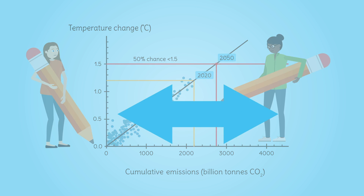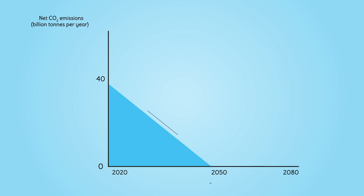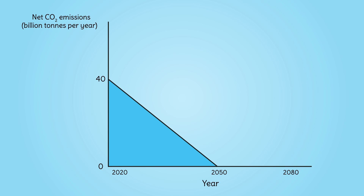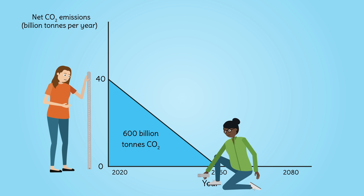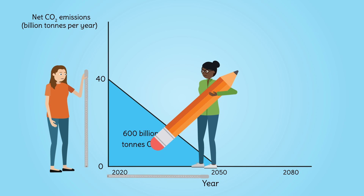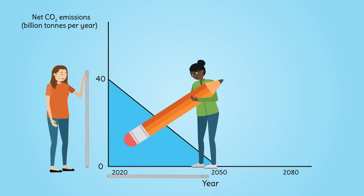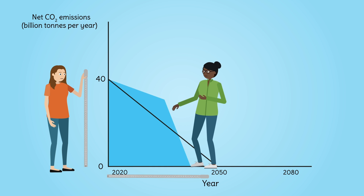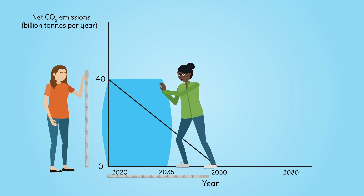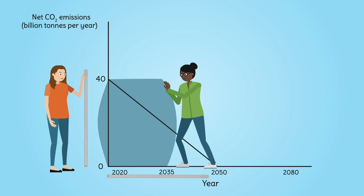This relationship between cumulative emissions and temperature change now tells us our remaining carbon budget. If we want to stay below 1.5 degrees of warming, we have around 600 billion tons of CO2 remaining. Remember our triangle — we know we're limited to an additional 600 billion tons, and we are currently emitting 40 billion tons per year. This is why we must reduce to net zero by 2050. If we don't reduce emissions, we only have around 15 years before the 600 billion ton budget is blown.